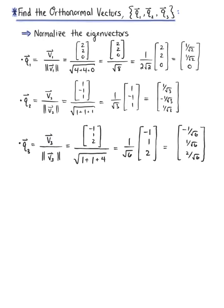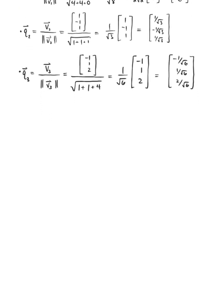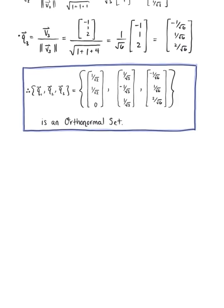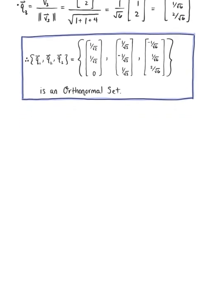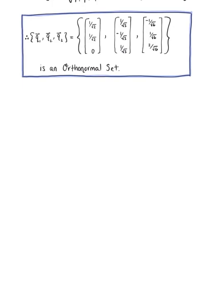Now that we have normalized each eigenvector, we can officially claim that the set of vectors q sub 1, q sub 2, and q sub 3 form an orthonormal set — meaning these vectors are orthogonal to each other and are unit vectors. We now need to compute the products of vector q sub i with the transpose of vector q sub i.